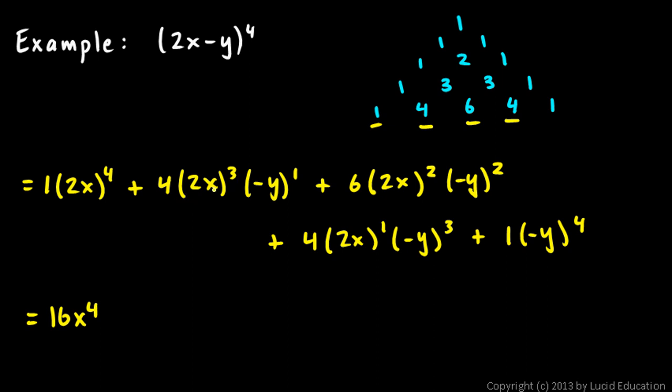And then this 2 is cubed, so 2 cubed is 8 times 4 is 32. But don't forget the negative sign right there. So this is a minus 32. And we have an x cubed, and we have a y. We don't have a negative y, because the negative sign is taken into account already right there. So minus 32x cubed y.